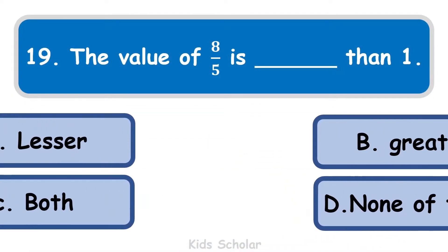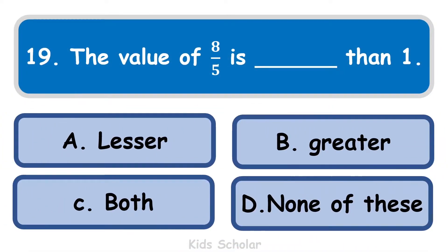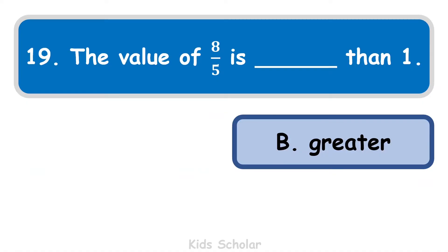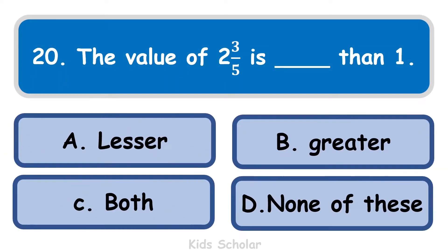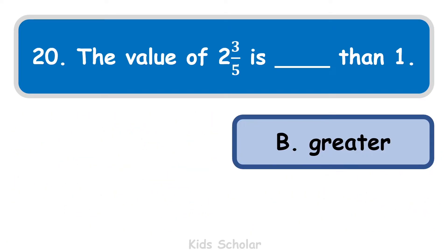Next question is: the value of 8 by 5 is dash than 1. The value of 8 by 5 is always greater than 1 because its numerator is bigger than its denominator. Next question: the value of 2 by 5 is less than 1 — so the correct answer is less than 1.